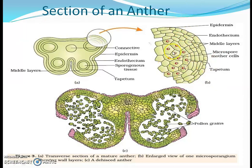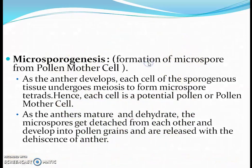The tapetum is rich in cytoplasm and helps develop the microspore mother cells. The cells are able to take nutrition from it, and after they mature they undergo meiosis and form four microspores which mature to form the pollen grains. This process is known as microsporogenesis — the formation of microspores from pollen mother cells. As the anther develops, each cell of the sporogenous tissue undergoes meiosis to form microspores, hence each cell is a potential pollen mother cell.